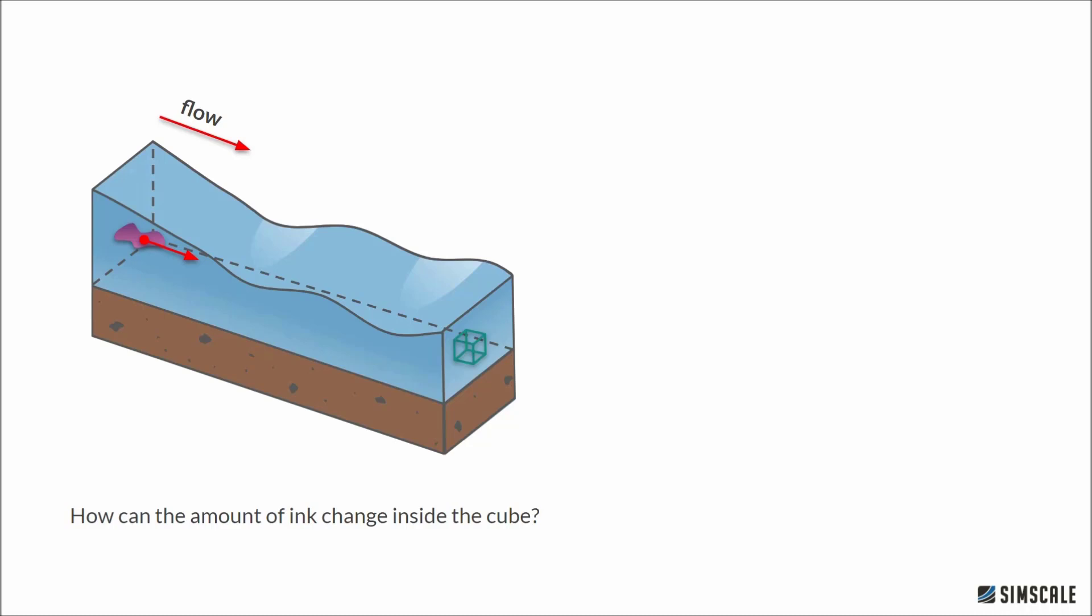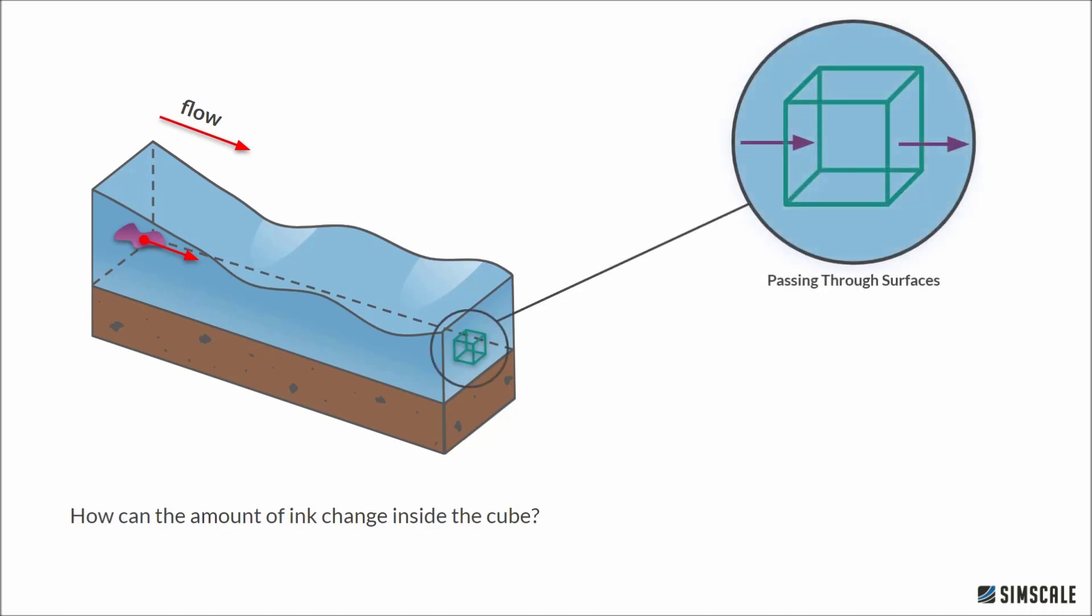Let's try to think of all the ways this can happen. Most obviously, the ink can move in the river and maybe pass through one of the sides of the cube. That would definitely change the amount of ink within the cube. It would make the total amount of ink in there go up, right? The same but opposite is also true. Ink which has gotten into the cube can also leave through the sides of the cube.